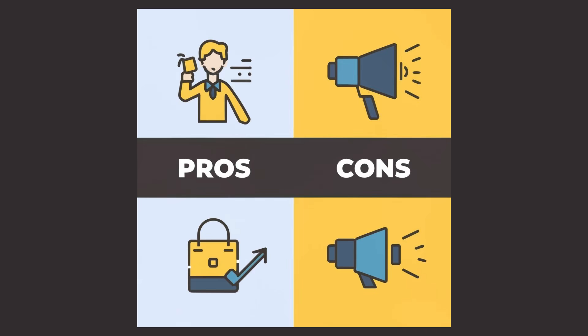Zigbee offers low-power consumption, mesh networking, and broad adoption in smart home devices. Its main drawback is limited range compared to other options.